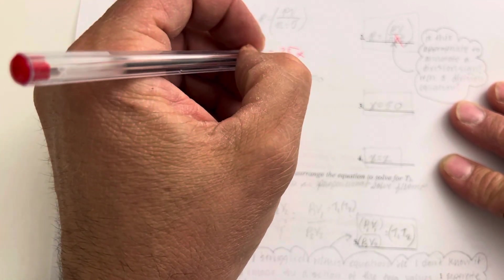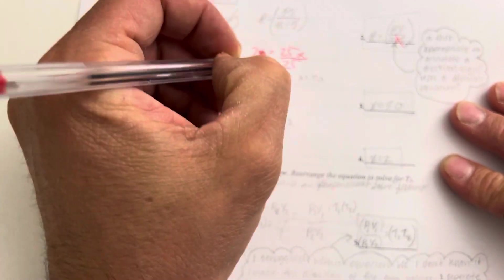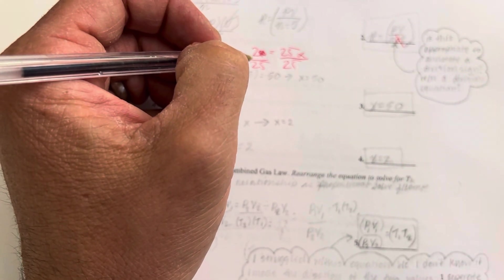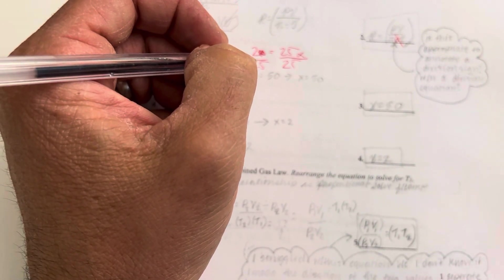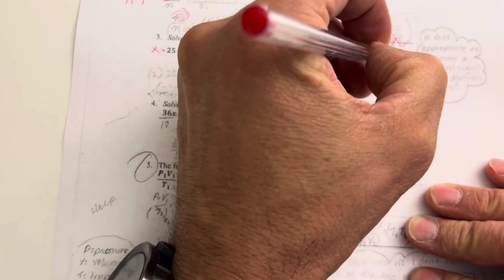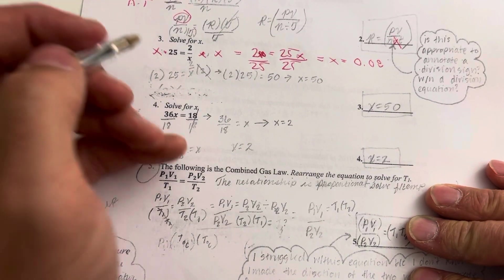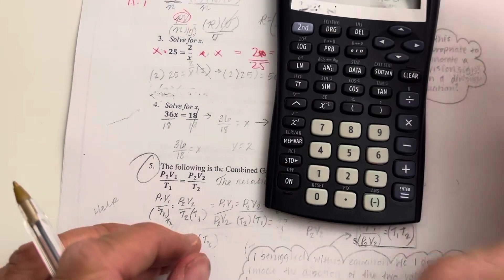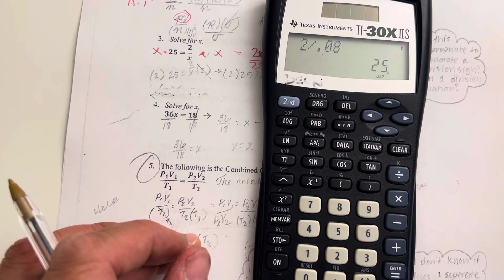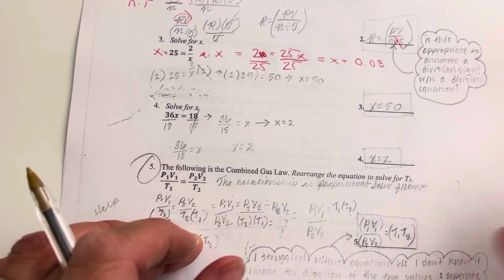So then what we would do to solve for x is divide this by 25, and divide this by 25. So if we take 2 divided by 25, we end up with x being equal to 0.08. And you can check that if you take a calculator, and if you take 2 divided by 0.08, you end up with 25. So this one would be incorrect.